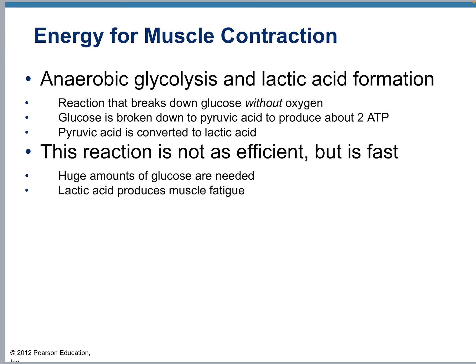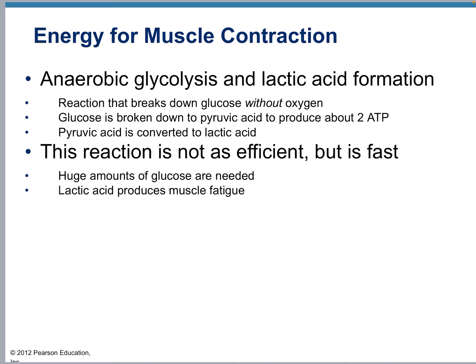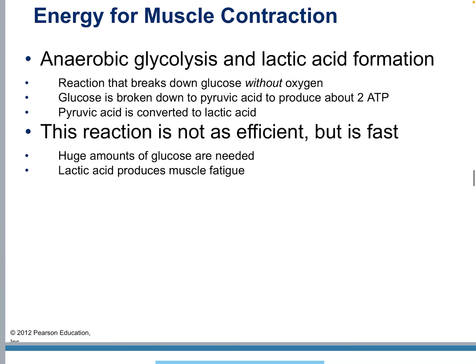If you do not have oxygen, anaerobic respiration is the only way to produce energy, resulting in pyruvic acid and then lactic acid. The good news is you can do it without oxygen — if you're sprinting and don't have a ready supply of oxygen, you can still perform this. Glucose is broken down into pyruvic acid to produce about 2 ATP, but then it converts to lactic acid. Huge amounts of glucose are needed, and lactic acid will then produce muscle fatigue — that's when your muscles start getting sore after running, because they're building up lactic acid.